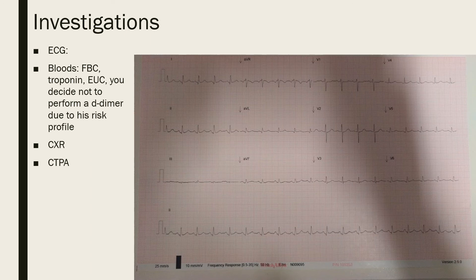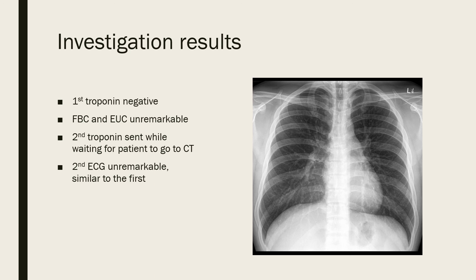Basic investigations are organised. An ECG is done and shows sinus tachycardia with no other significant abnormalities — standard for PE. Blood tests are sent: FBC, troponin, and EUC. A D-dimer is not done given his risk profile. A chest X-ray and CTPA are ordered.